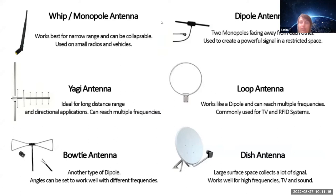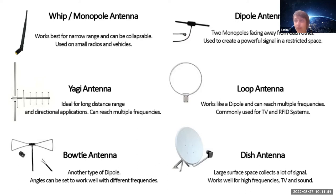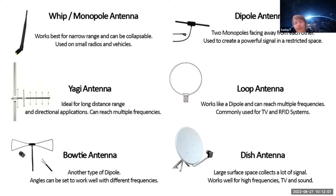Depending on the signal characteristics, you'd want to use different antennas. The whip monopole antenna is quite simple — used in car radios. Yagi antennas are used for television and can also be used as satellite communication antennas because they have high gain. Bow tie antennas aren't commonly used for satellites. Dipole antennas are used as feeds for dish antennas. The dish antenna — parabolic antenna — is most commonly associated with satellite communications.